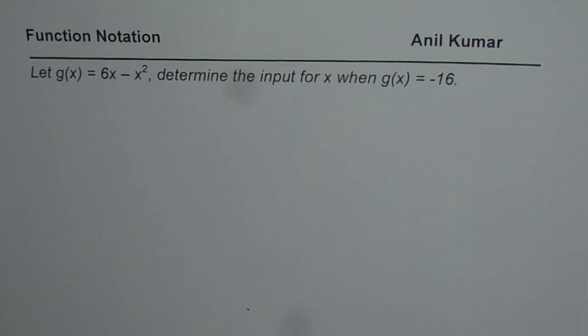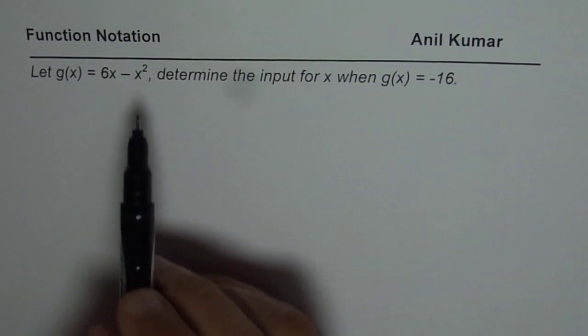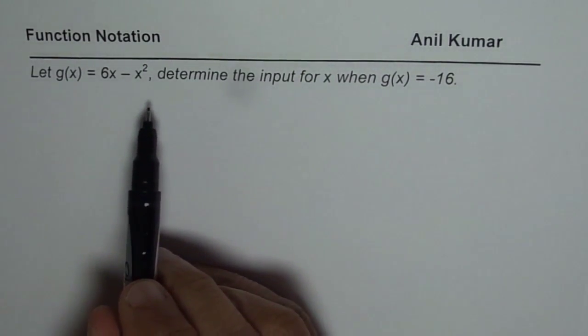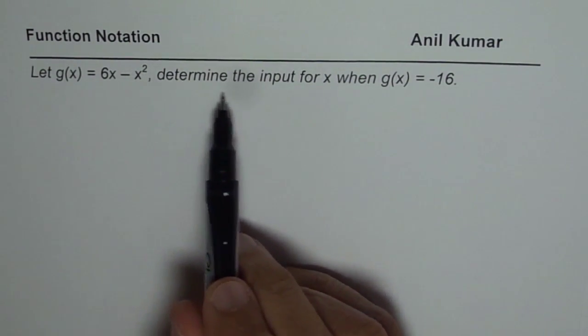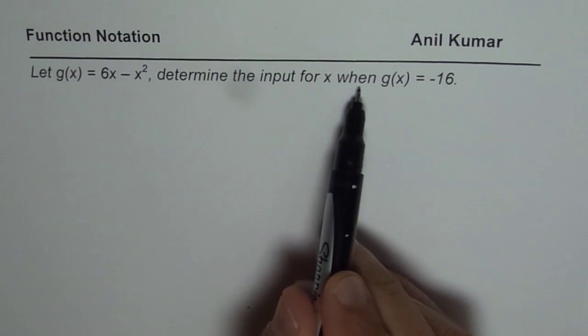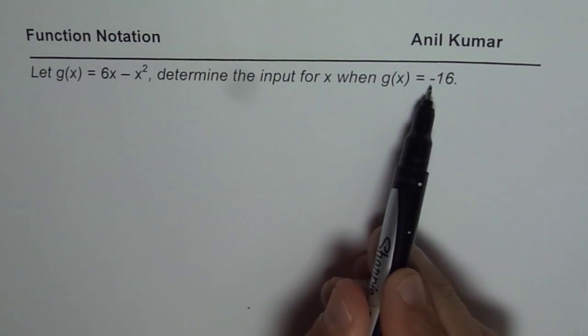I am Anil Kumar and I have taken up this question since some students were having difficulty in solving quadratic equations. The question is: let g(x) equals 6x minus x squared, determine input for x when g(x) equals minus 16.